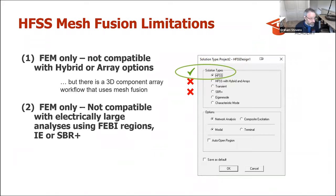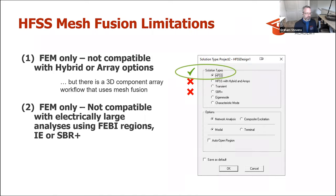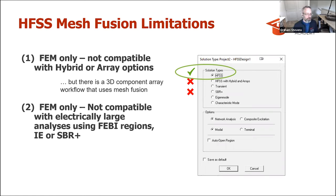There are some limitations associated with mesh fusion. Mesh fusion is associated with FEM only — it is not compatible with hybrid or array options. However, there is a 3D component array workflow that uses mesh fusion underlying. Mesh fusion does not work with electric and large analyses where you have PO regions, IE, or SBR+ regions. When you get to more than 10 wavelengths and you're looking at SBR+, mesh fusion is no longer used — you would jump to an SBR+ model.